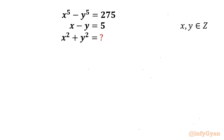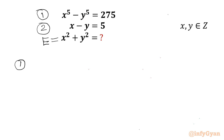Welcome back to Infigyan, my dear friends. In today's video we have one very interesting system of Diophantine equations where we are going to evaluate x squared plus y squared. Let us get started by considering equation number 1 and equation number 2, and let us call this expression equal to E. Now I will consider equation 1: x minus y equals 5.